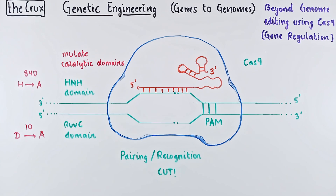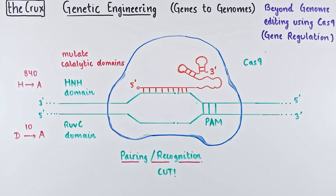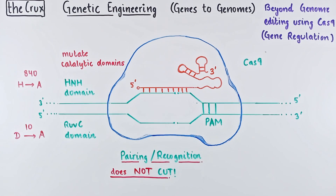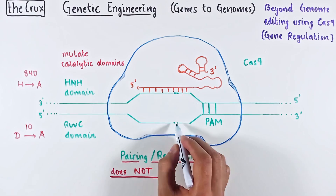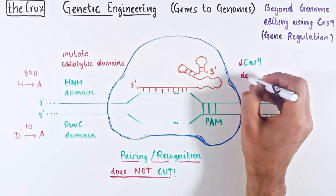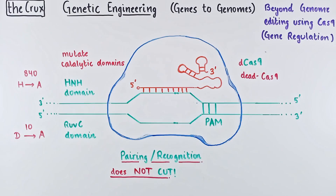After this mutation, the enzyme can still pair and recognize the target DNA, but due to the mutation in both domains, it cannot cut. We call this Cas9 a dCas9, or a dead Cas9.